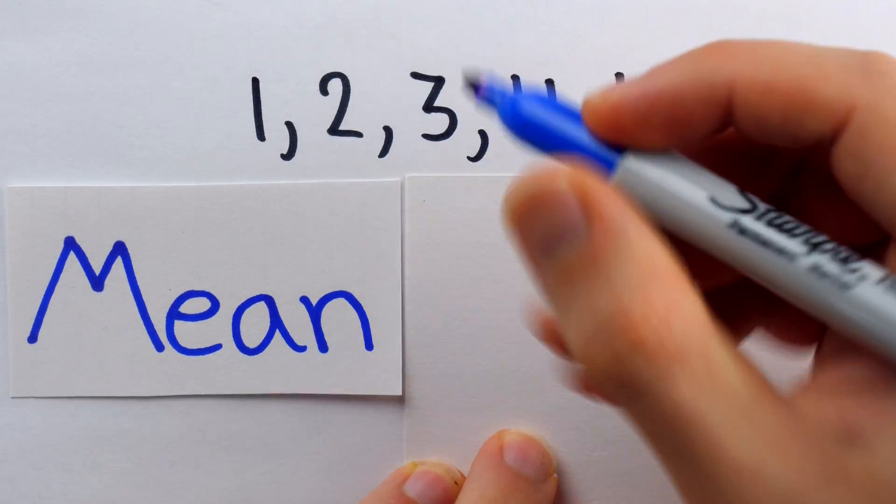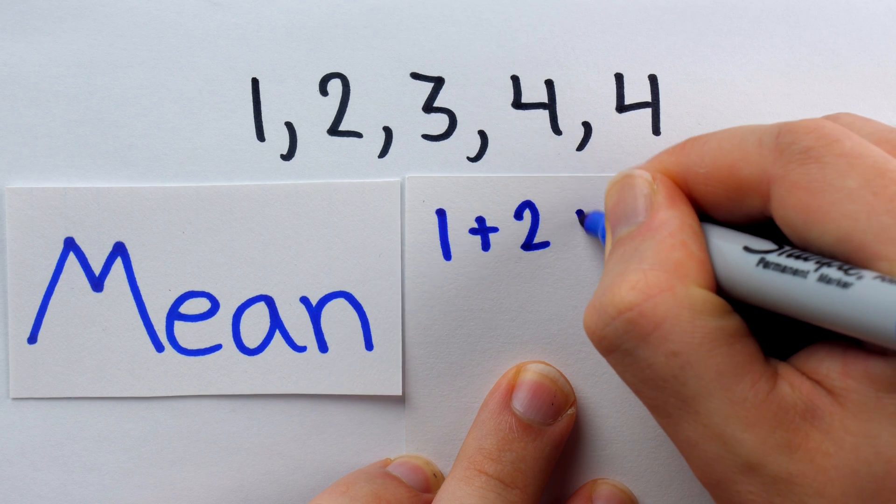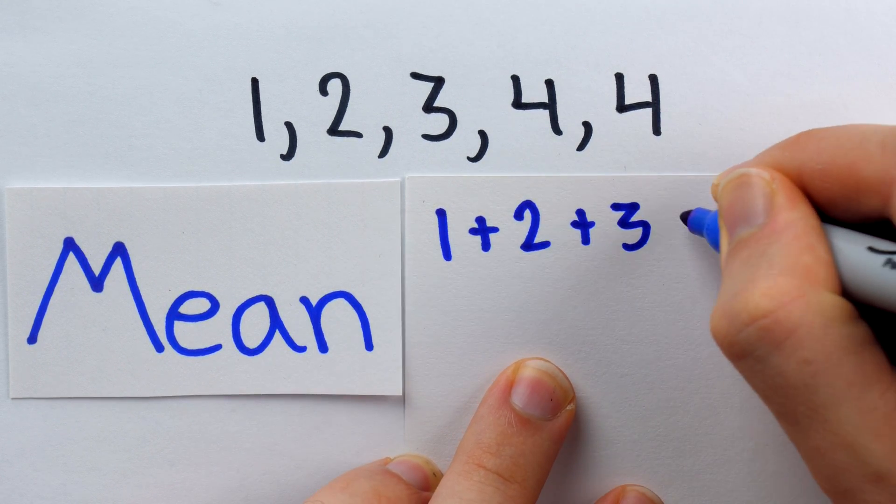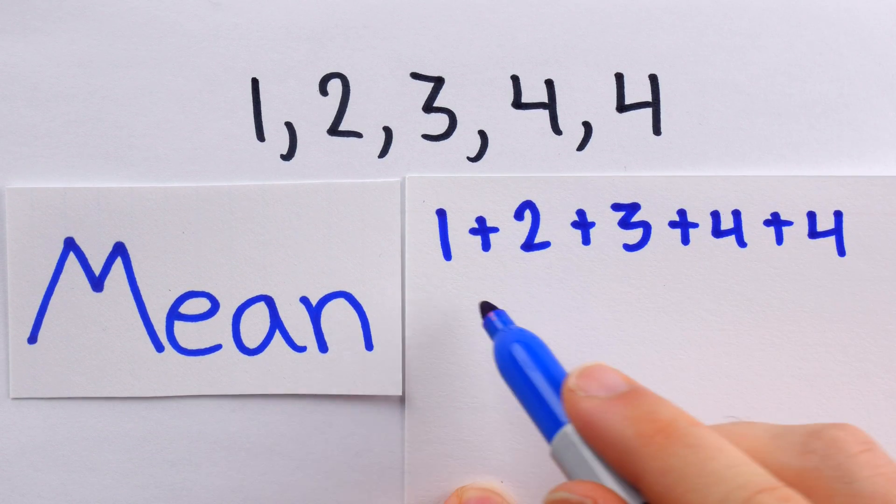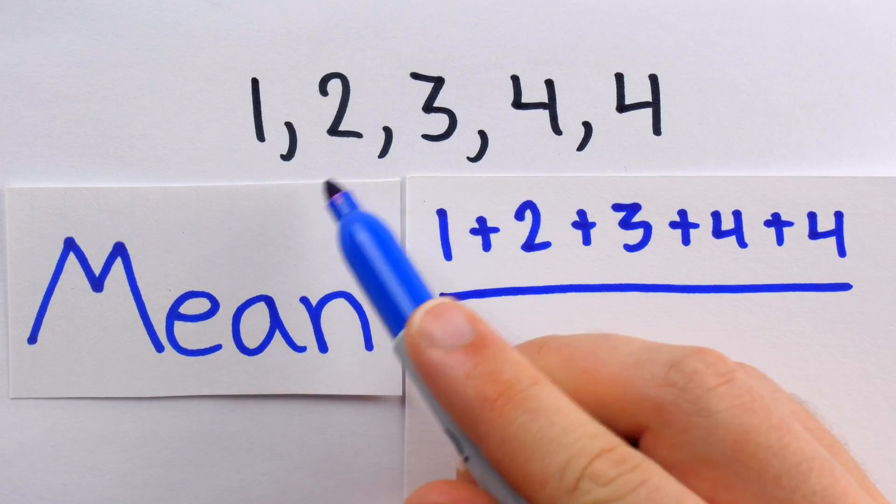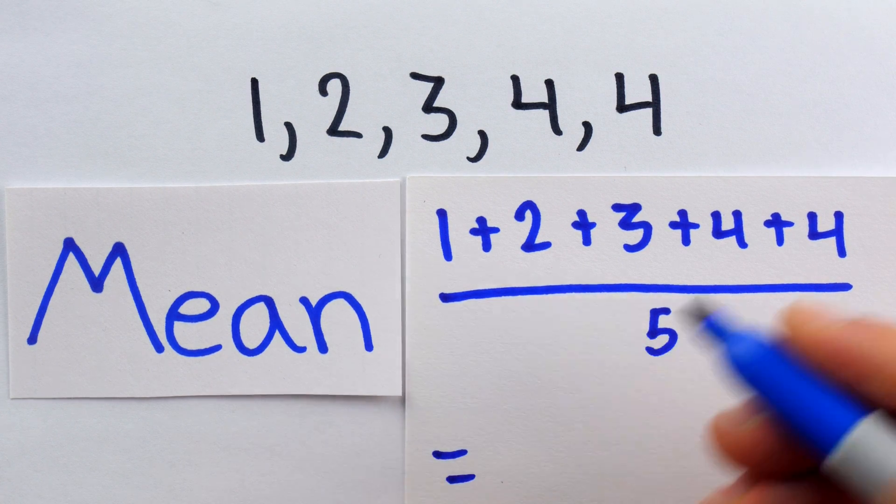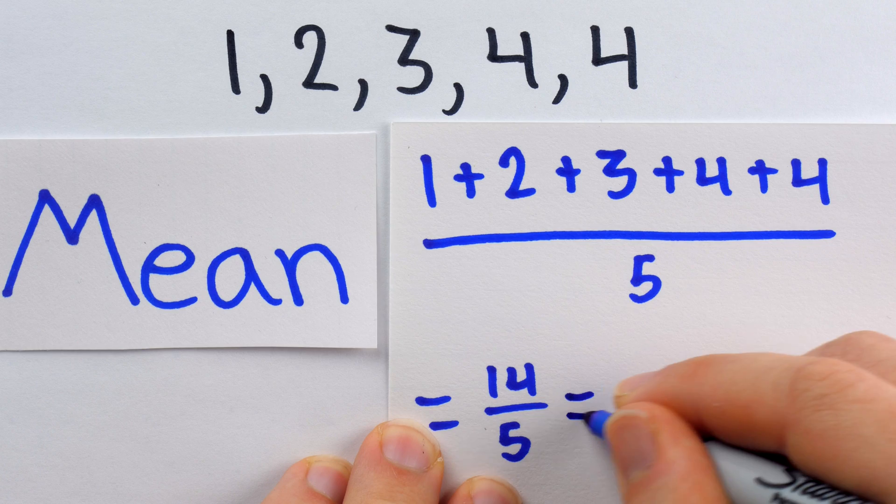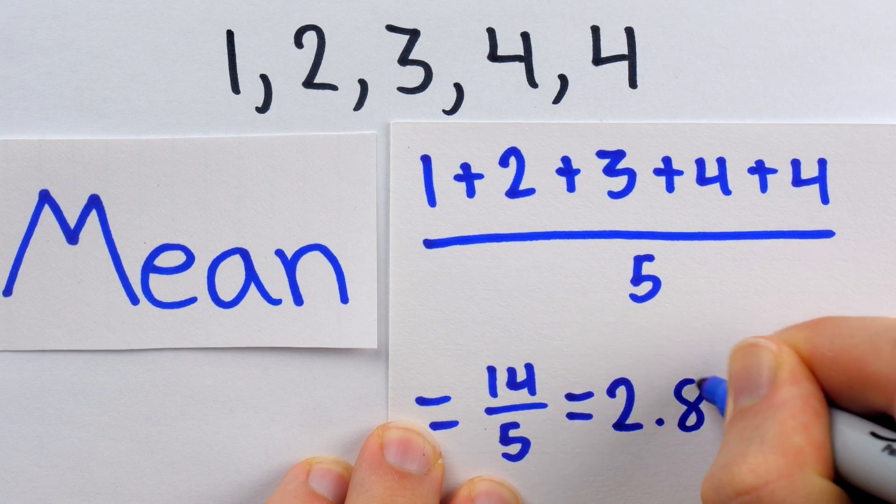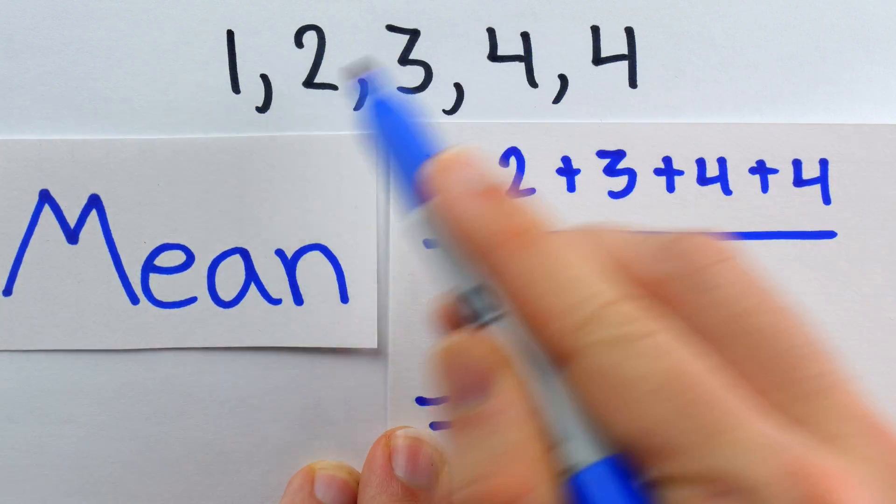The mean is perhaps the most common type of average. What it does is takes the data in question, adds it together - 1, 2, 3, 4, and 4 - and then divides by the total number of data points. In this case, there are five data points, so the mean of this data set is 14 divided by 5. And so in this case, the mean would be 2.8, which seems fairly representative of the average value in this data set.